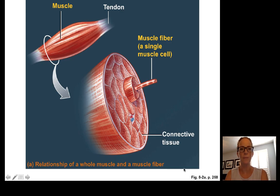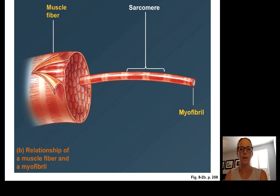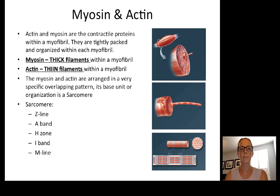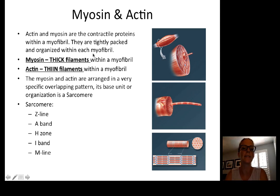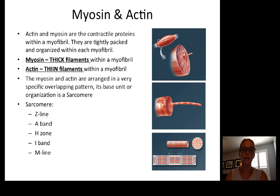There are many sarcomeres per myofibril and many myofibrils per muscle cell or muscle fiber. The major contractile proteins within the myofibril organelles are myosin, which makes up the thick filaments, and actin, which makes up the thin filaments. Myosin and actin are arranged in a very specific overlapping pattern that creates the striations you see when looking at skeletal muscle histology.